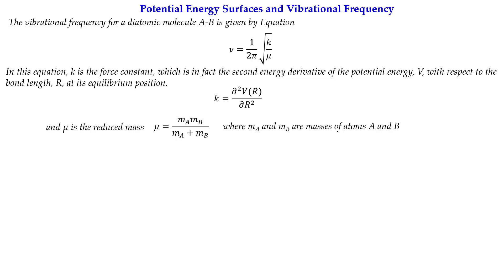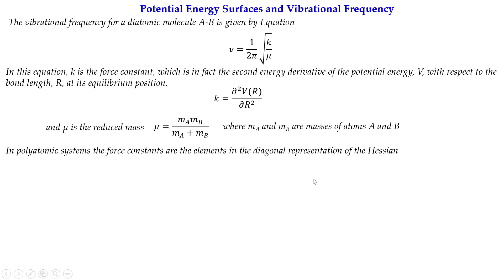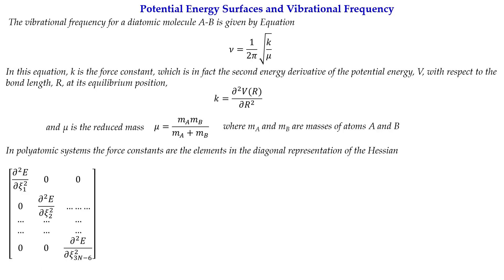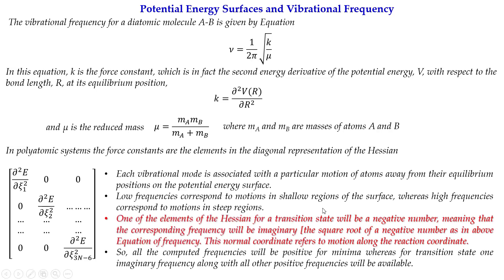μ is the reduced mass, because in vibrations both masses make contributions, so we consider the reduced mass. For a polyatomic molecule, you get many force constants. We can arrange them into a matrix — that is the Hessian — which we already defined in our last lecture.